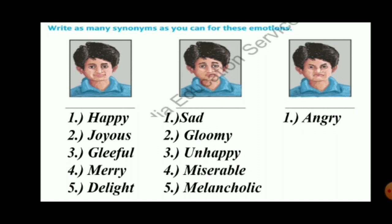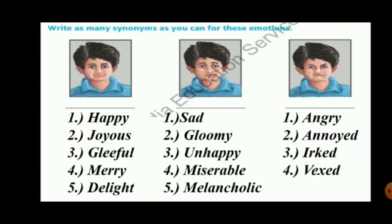Synonyms of angry: annoyed, irate, waxed, and cross. So in summary — synonyms of happy: joyous, gleeful, merry, delight. Synonyms of sad: gloomy, unhappy, miserable, melancholic. Synonyms of angry: annoyed, irate, waxed, cross. Synonyms are words that have the same meaning.